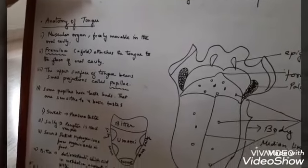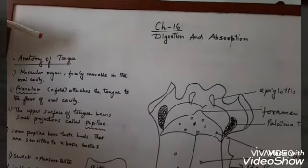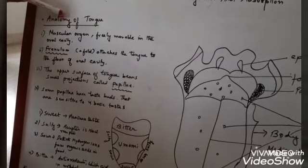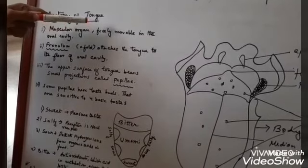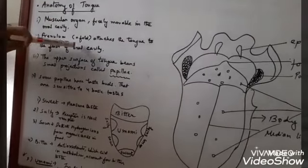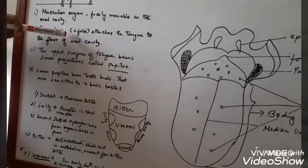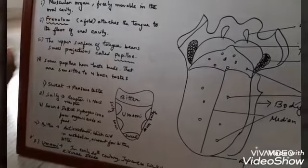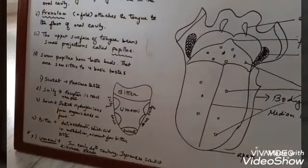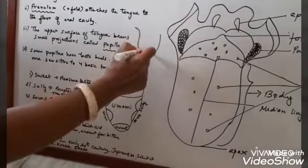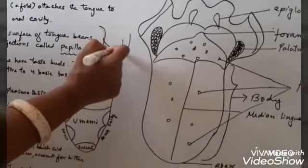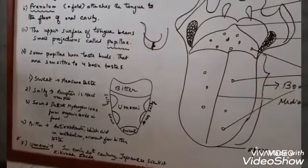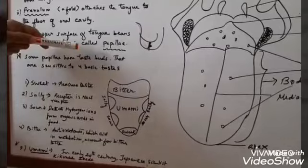Today I am going to teach you about a few important organs related to our digestion process. First is the mouth. In the anatomy of the mouth, we are going to study about the tongue. The tongue is a muscular organ — it is freely moving — but it is attached to the floor of the oral cavity by a structure called the frenulum. When you roll up your tongue, you can see the frenulum below.